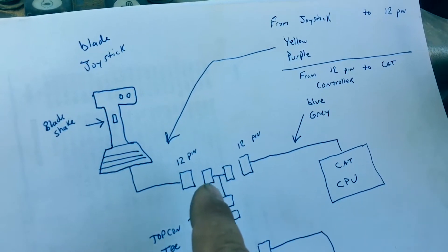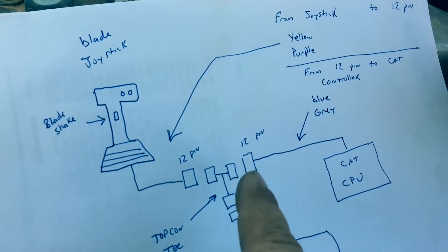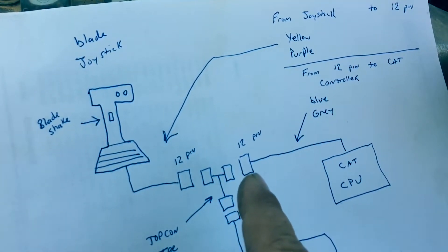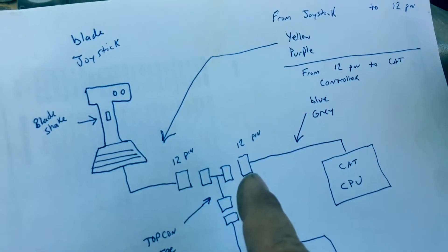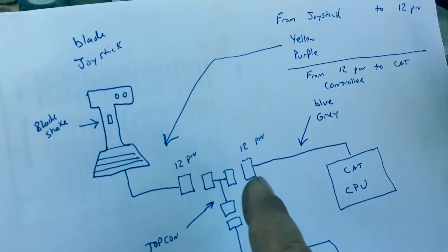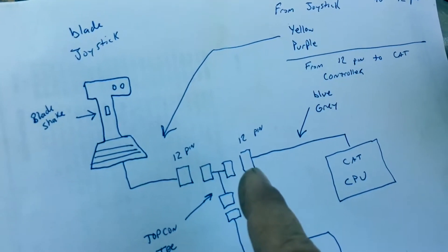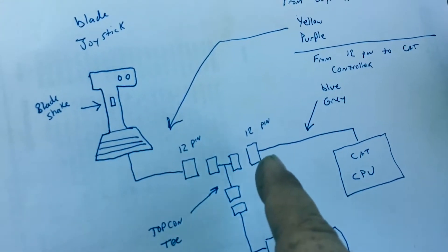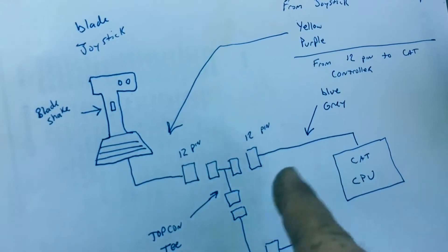So yellow-purple comes into the Deutz connector. And then actually on the other side of the female connection over here, they change color. Purple becomes blue, yellow becomes gray.